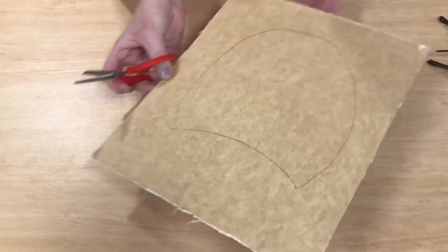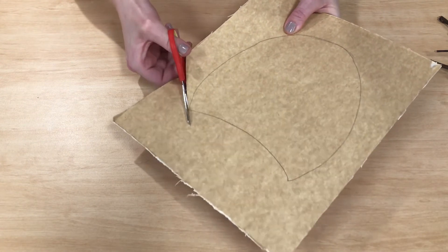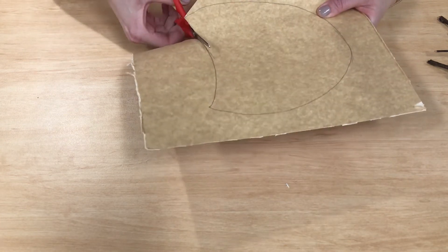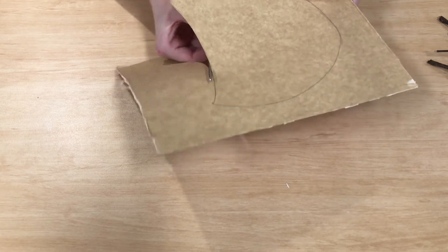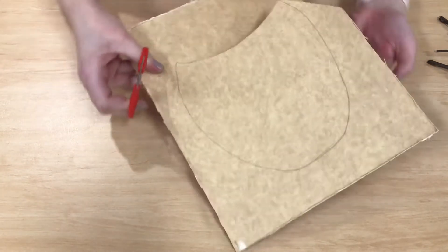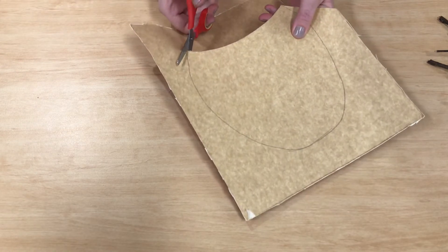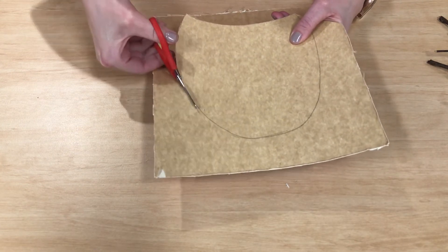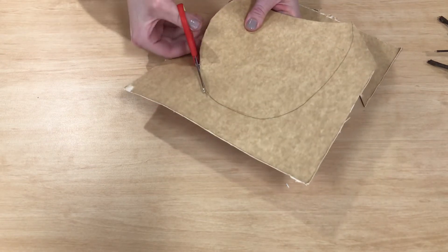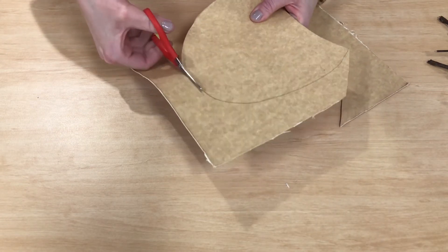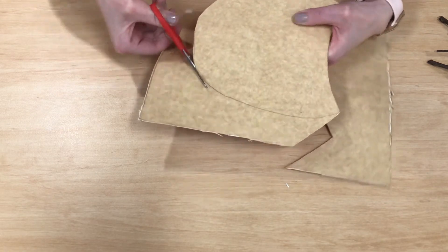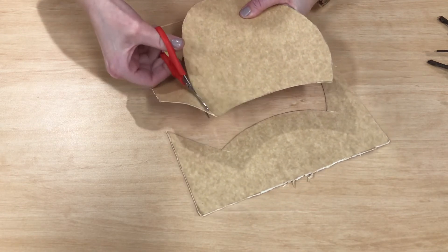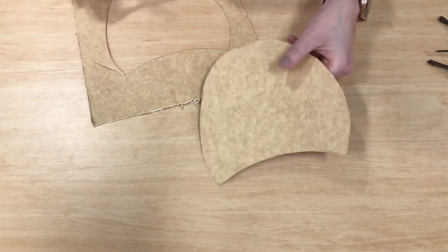There we'll use our scissors to cut around. Now if you do need help from an adult, please ask. There we go. Now don't forget to save the pieces of cardboard that you'll be cutting off because we can use that for a beak on our owl. There we go. So there's our owl shape.